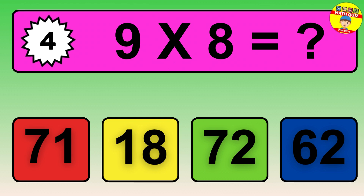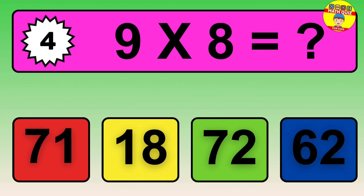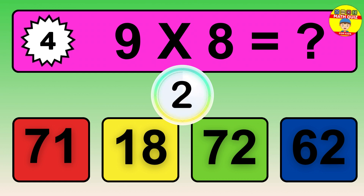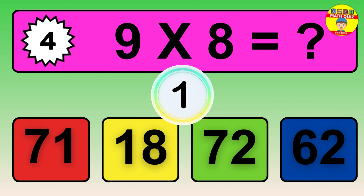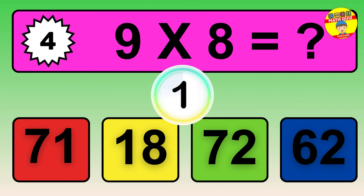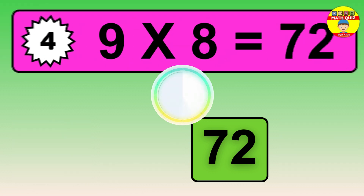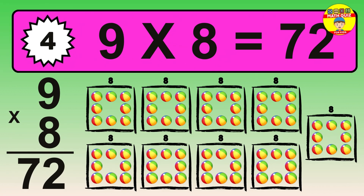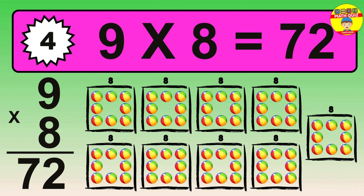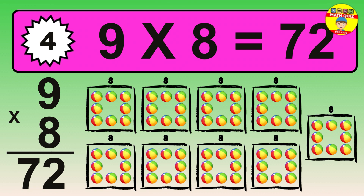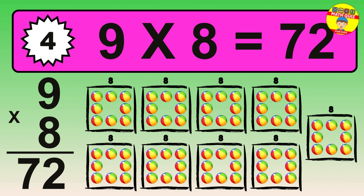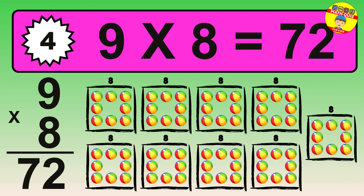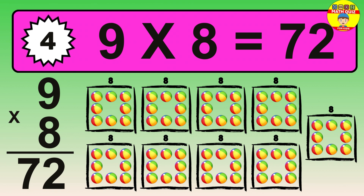Question 4. 9 times 8 equals what? The answer is 9 times 8 is 72. To calculate, we have 9 groups with 8 balls each one. So, how many balls do we have? 72 balls.